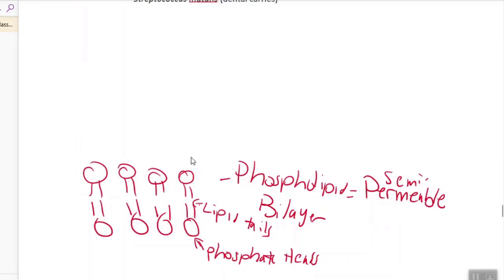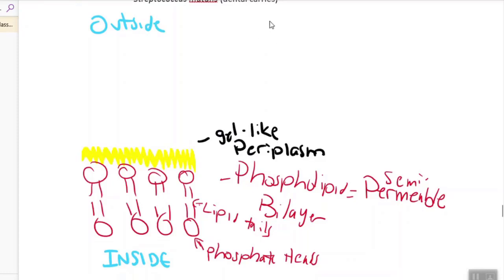Next, outside of this phospholipid bilayer, here's the inside of the cell just to be clear. Inside, and up here this will be the outside. We have a very thin space. This is actually a gel-like material, which we call the periplasm. In gram-positive bacteria, this space is very thin, not thick at all. There may be a few proteins inside of it, just very few.